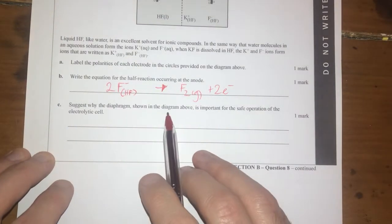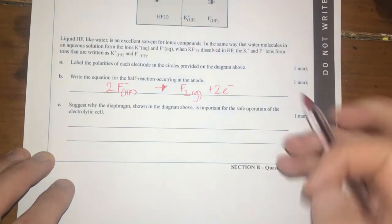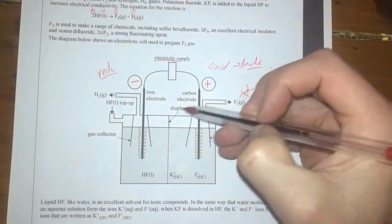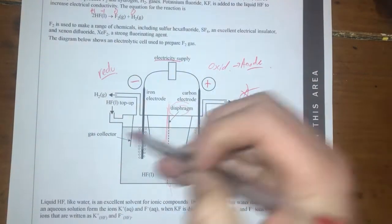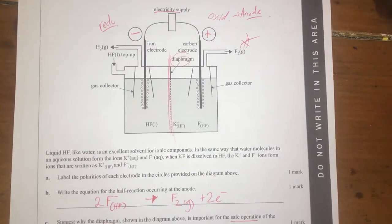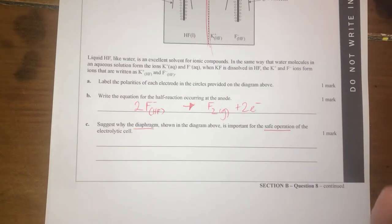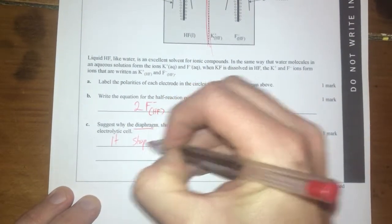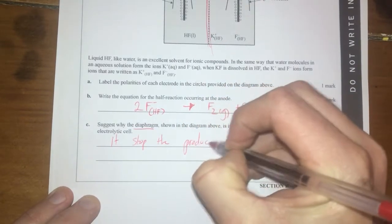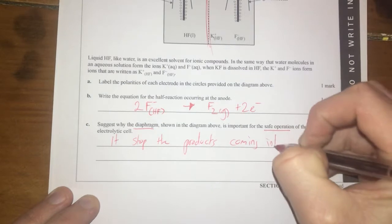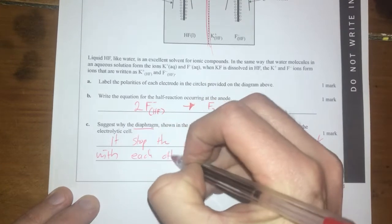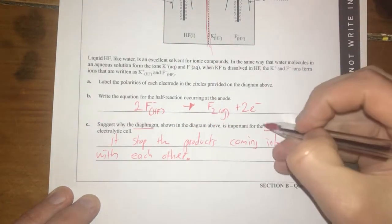I suggest why the diaphragm shown in the diagram above is important for the safe operation, so the diaphragm is for the electrolytic cell. Looking at this the diaphragm here is separating the two sections of our cell so what that's all about is simply just stopping the products from coming in contact with each other. So what this does it stops the products coming into contact with each other.